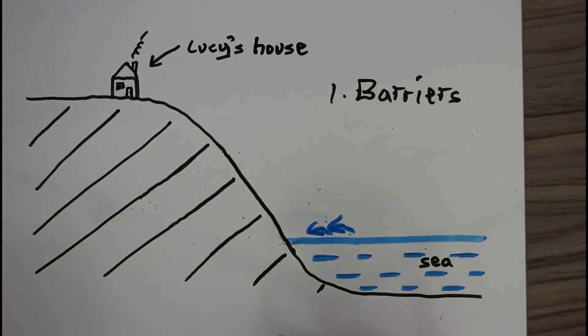Another way to protect the rock of the cliff is just by having a large amount of sand on the beach. Here I'm drawing on layers and layers of sand, and then the waves from the sea are crashing into the sand instead of the rock of the cliff. So the sand is absorbing the energy from the waves, and therefore the rock of the cliff is protected.